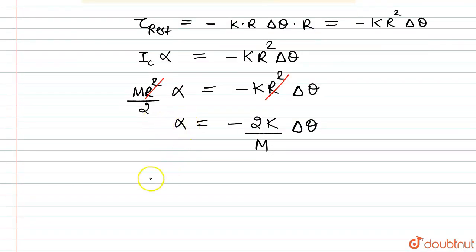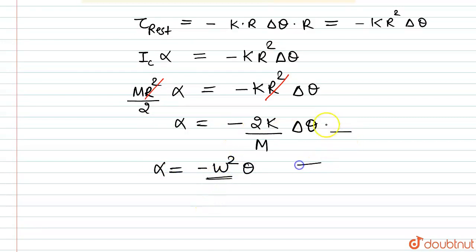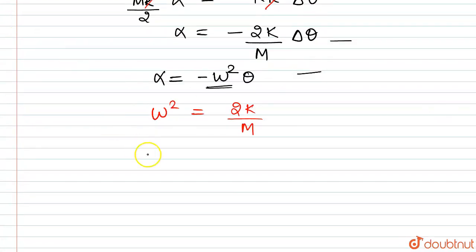We know that alpha = minus omega²·theta, where omega is the angular frequency. Comparing these two equations, we can write that omega² = 2k/m. Therefore omega = square root of (2k/m).